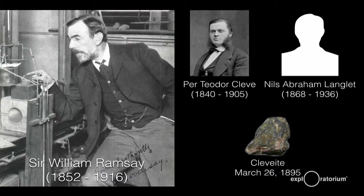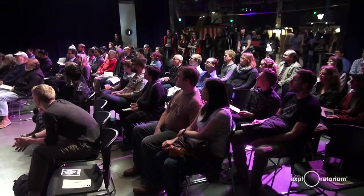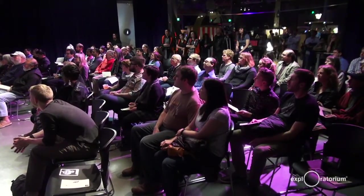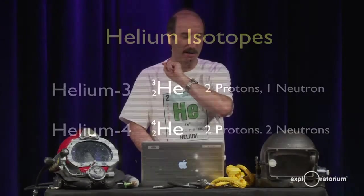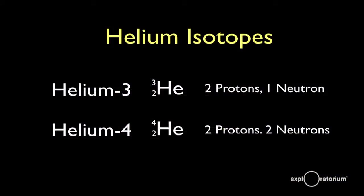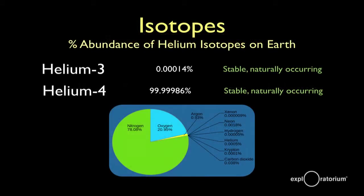Looking at helium, it comes in a couple of different forms. The form with two protons and two neutrons has an atomic mass of about four. Then there's another form — an isotope — with just one neutron: two protons and one neutron, called helium-3. That's a very rare form of helium. Helium-4 is most of what you see: 99.999986%, with just a tiny bit of helium-3.